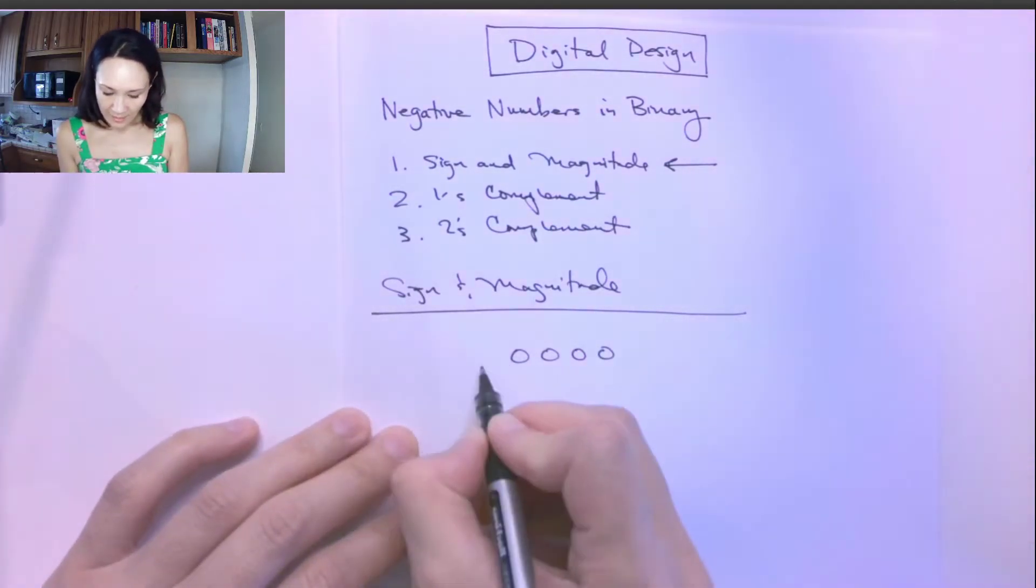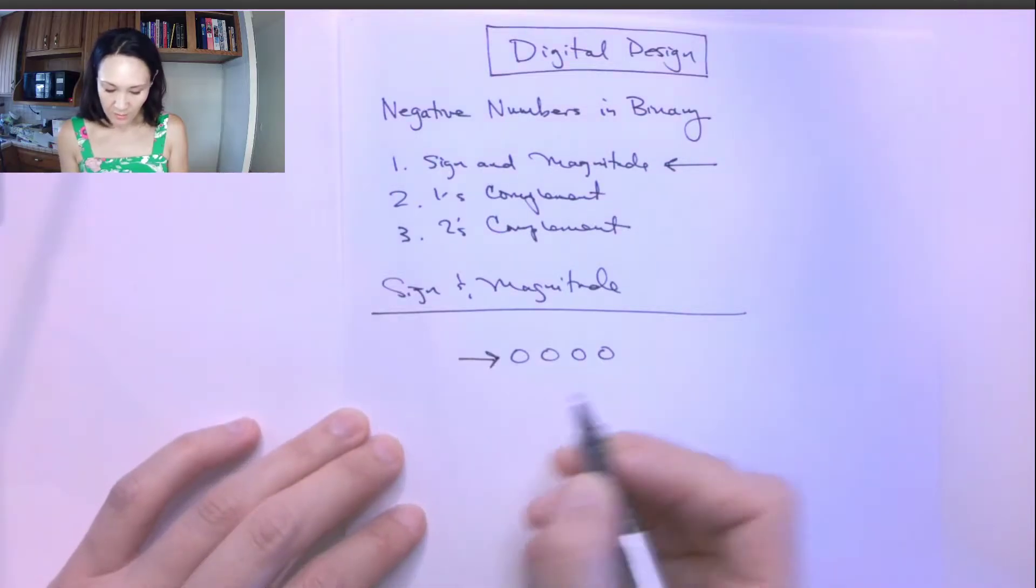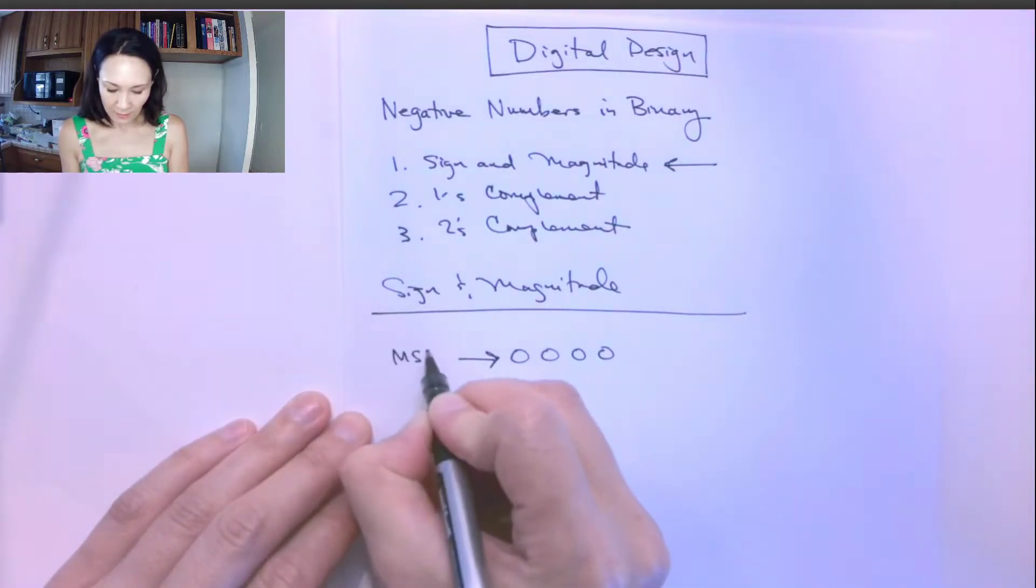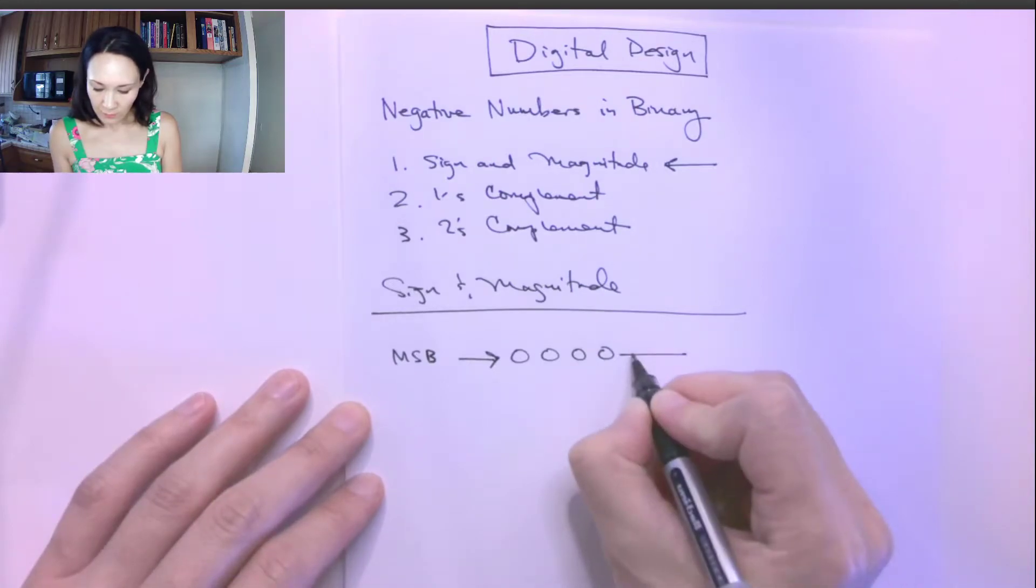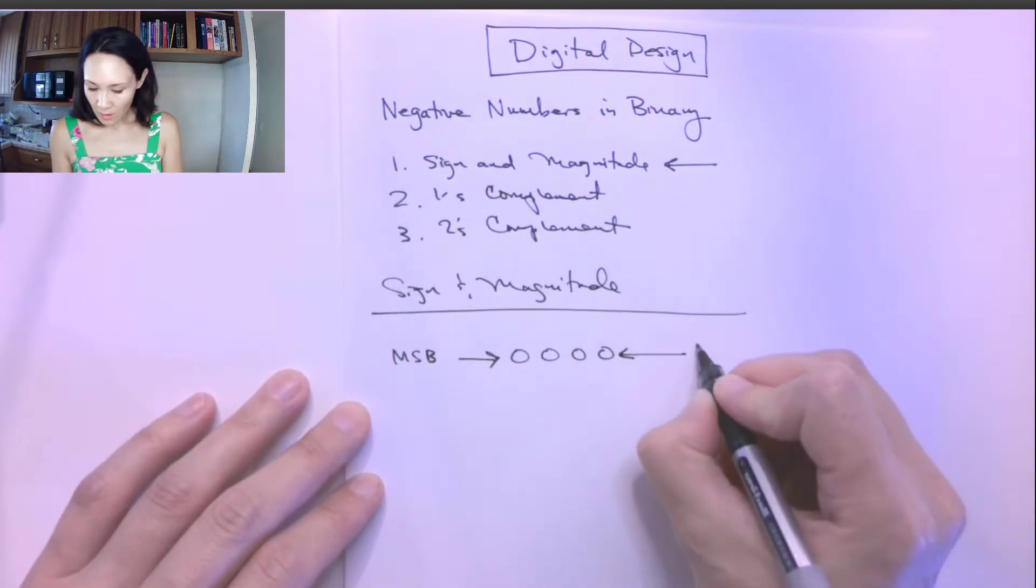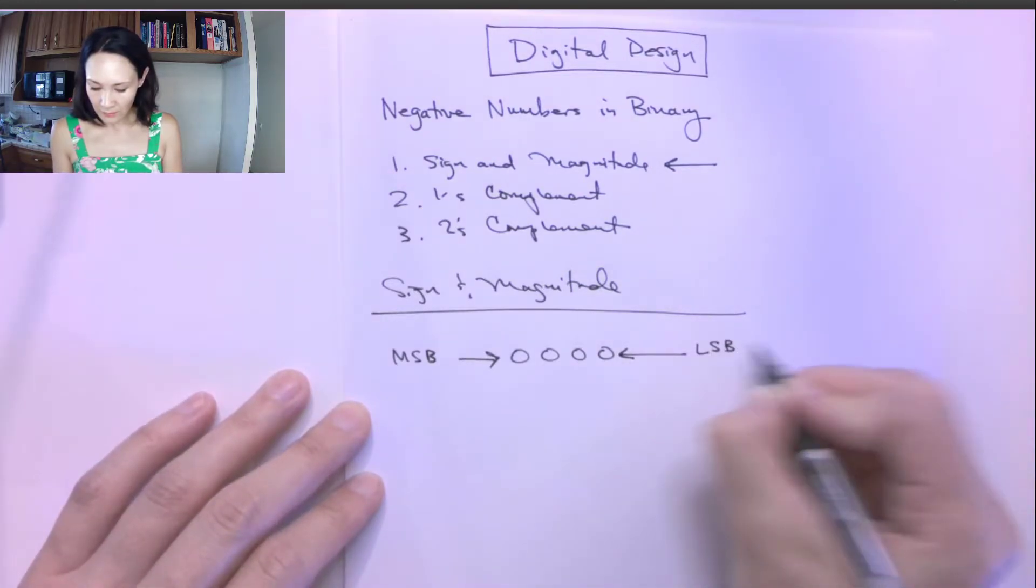So the leftmost bit here, we call this the most significant bit, the MSB. And then the one farthest to the right, we call this the least significant bit, the LSB.